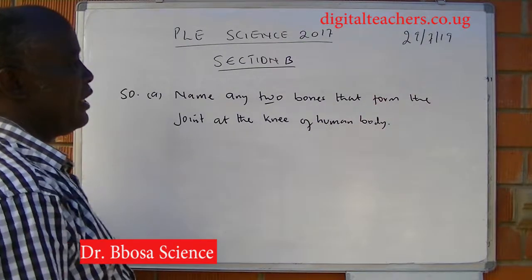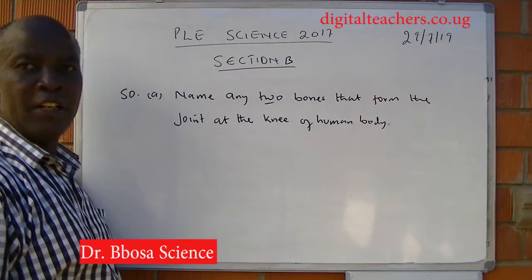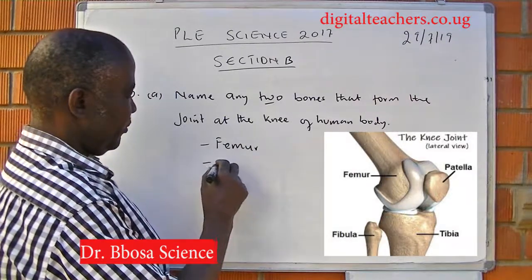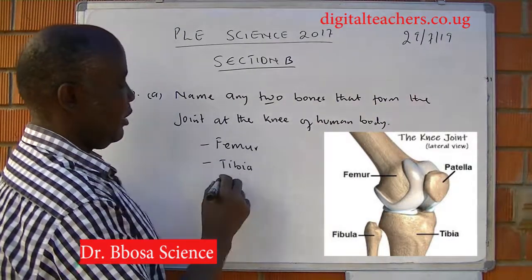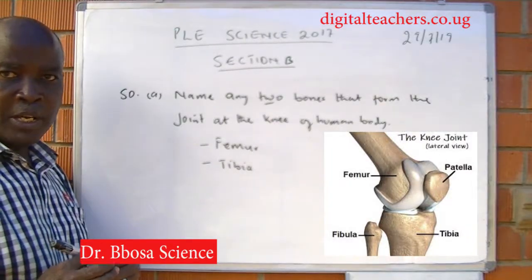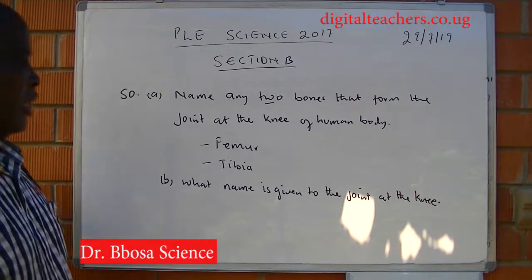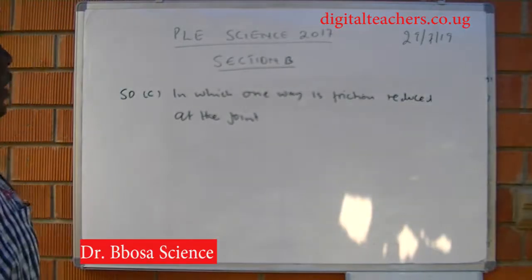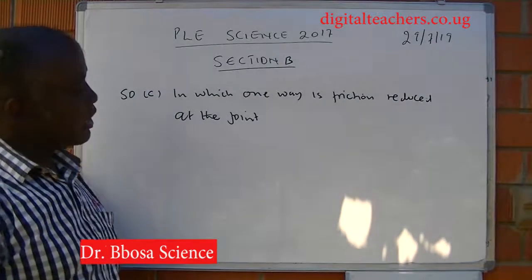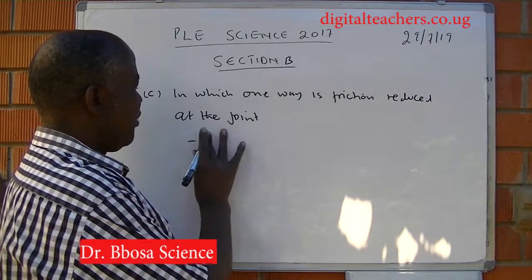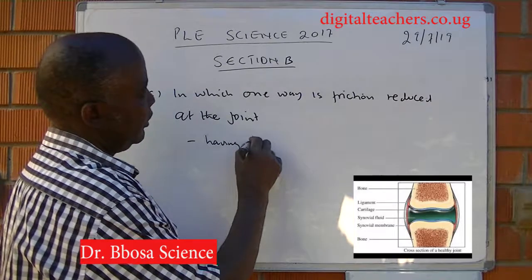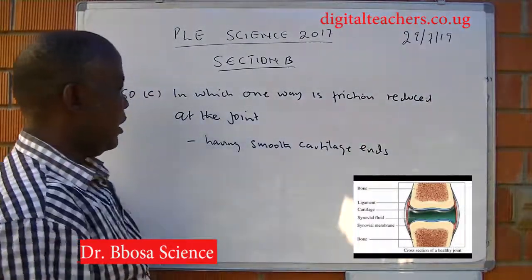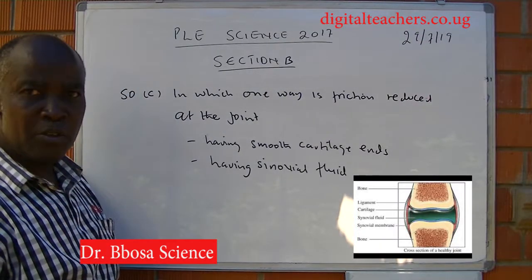Number 50a: name two bones that form the joint at the knee of the human body. That is the femur and tibia. Part B: what name is given to the joint at the knee? That is a hinge joint. Part C: in which one way is friction reduced at the joint? By having smooth cartilage and synovial fluid.